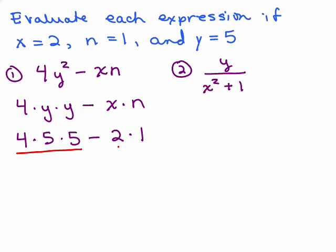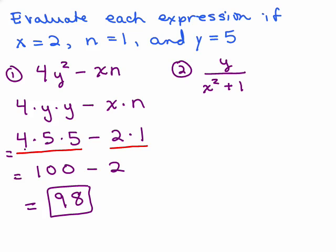So we have 4 times 5 times 5 minus x is 2, so we'll put in 2 for x, and n is 1. And now we're going to do our order of operations. So we could do our little underlining method. So I have 4 times 5 times 5, that's 100, minus 2 times 1 is 2. So my final answer is 98.